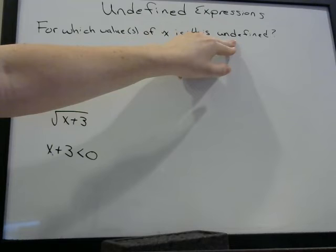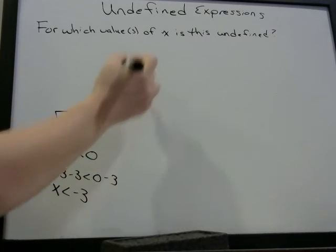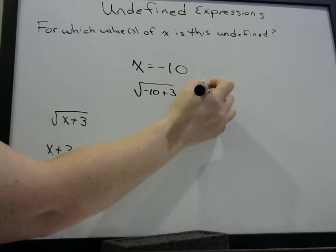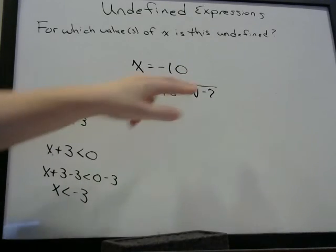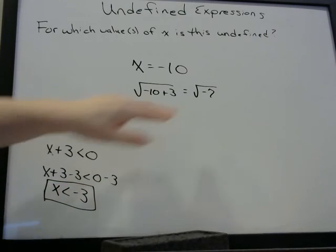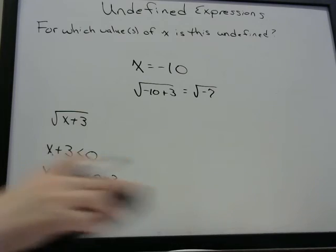So when the question asks for which values of x is this undefined and gives you something like √(x + 3), you just have an algebra problem with an inequality. The answer here is: anytime x is less than negative three, this is undefined. Let's test with x = −10: negative ten plus three is negative seven — you can't have a negative number under a square root sign, so that's why it's undefined when x is less than negative three.